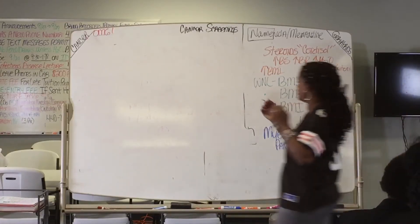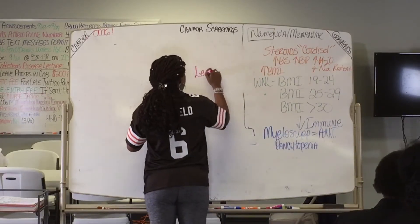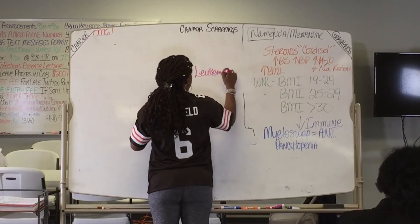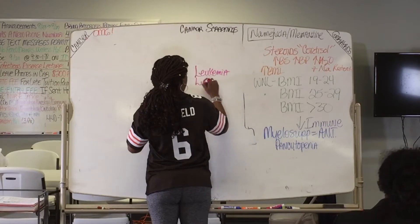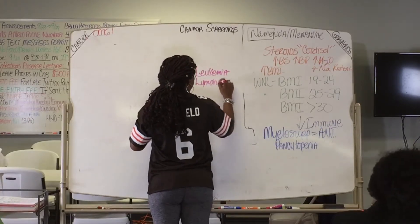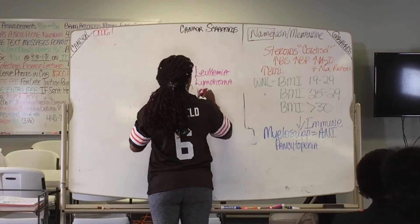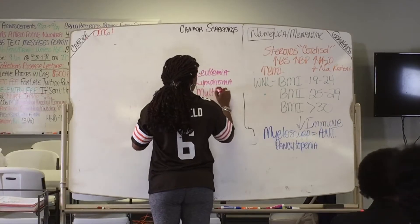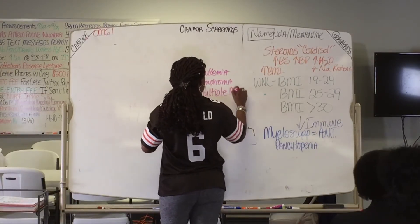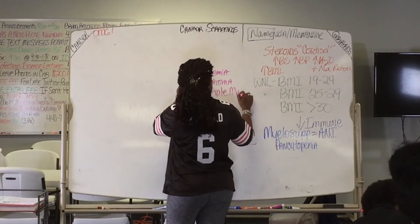On your ANT page, write this: leukemia, lymphoma, and write multiple myeloma, and realize that all of them are going to present the same way, ANT.